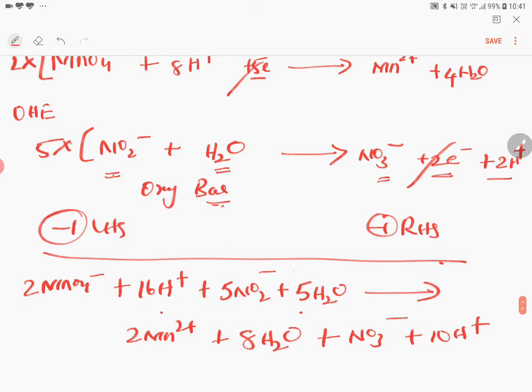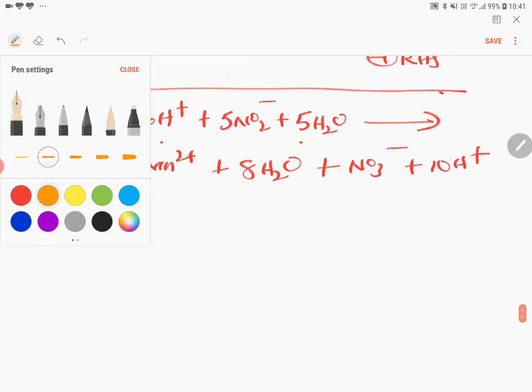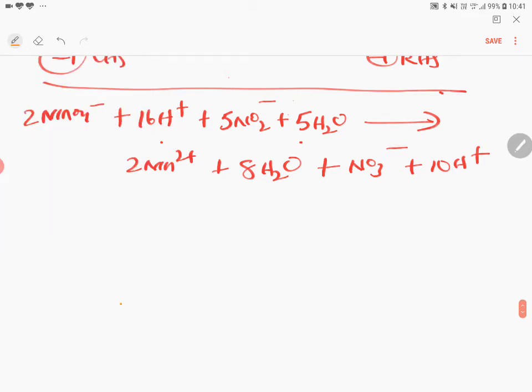Lot of things you have to cancel. Immediately equation will not come. See here. This is the final trick. Don't leave it like this. 16 minus 10 is 10. So where is the higher number? That side it should come.